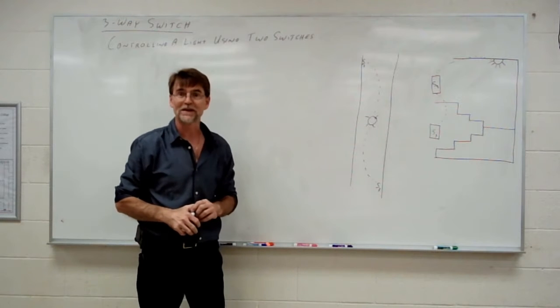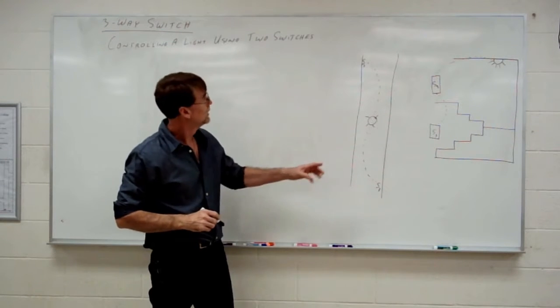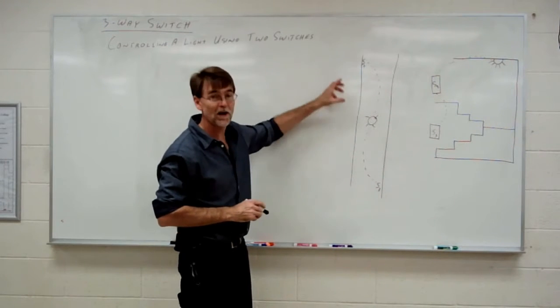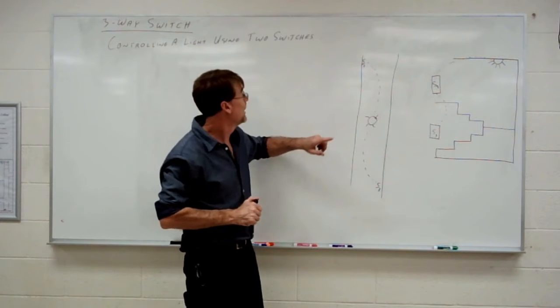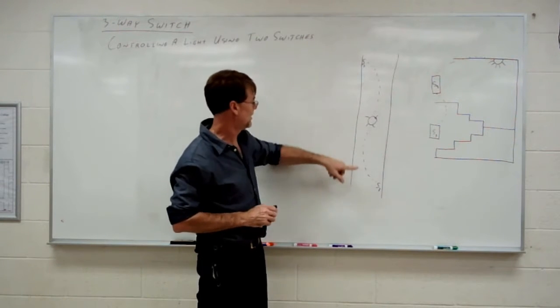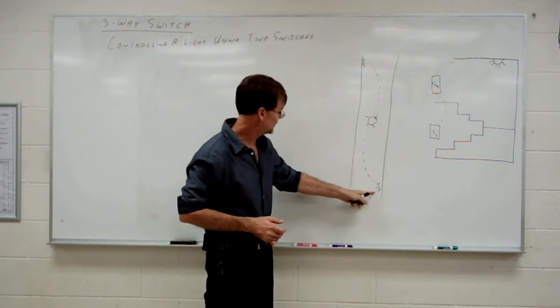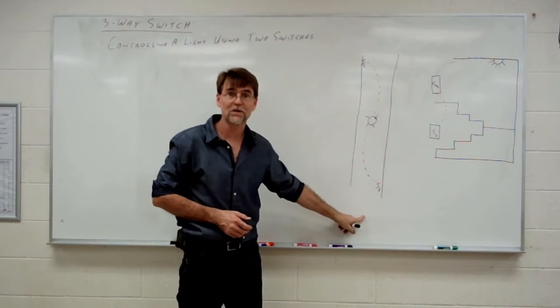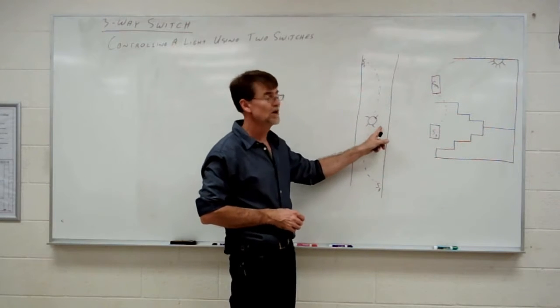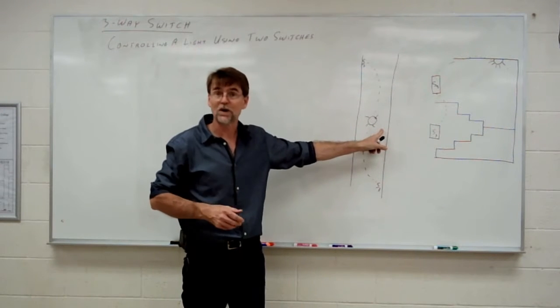So I've drawn a couple of pictures here to give you examples of where this might be used. Here's a long hallway, maybe not so long, it only has one light in the middle of it, but you want to be able to turn that light on from either end of the hall. And so we have two switches, two three-way switches at either end of the hall, either of which can control that light, turn it on or turn it off.